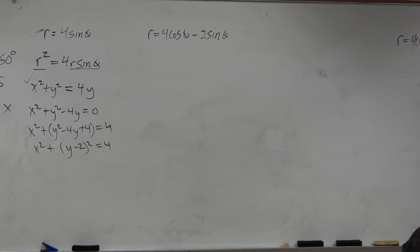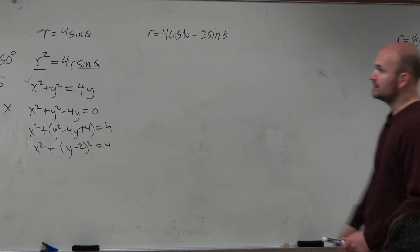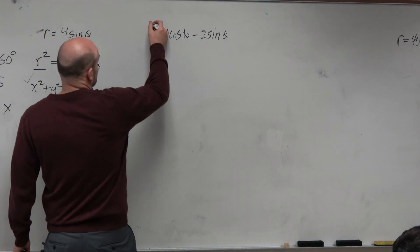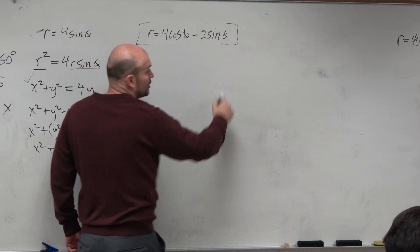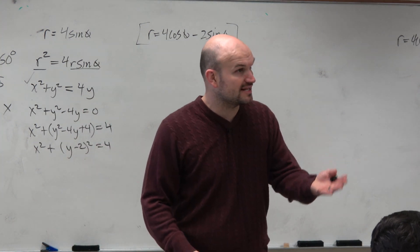In this case, what we're going to do, just like we did in the last example, is we're going to want to multiply by r. When you're multiplying everything by r, we know when we have r times cosine of theta, that's x. r times sine of theta, that's y.